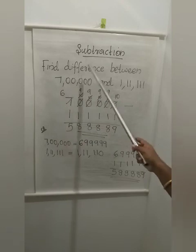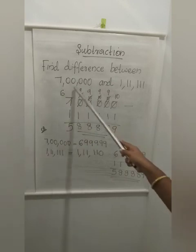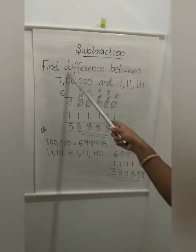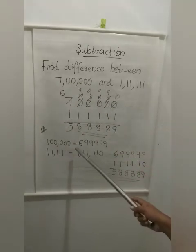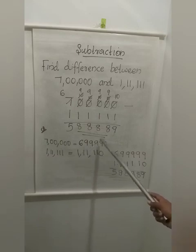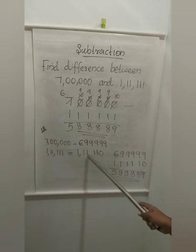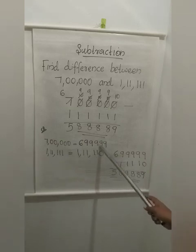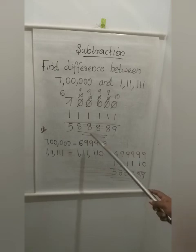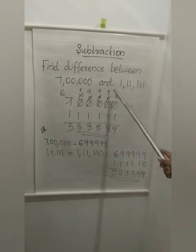Alternatively, when you have numbers like this with zeros, you can just take the predecessor of both numbers. What do you mean by predecessor? The number before. So what is the number before 7,00,000? The predecessor of 7,00,000 is 6,99,999. Similarly, the predecessor of the next number: 1,11,110. Now subtract between these two numbers — when you subtract you are getting the same answer. It is not compulsory to learn this method — any method you can use. Those who are following this method can follow it.